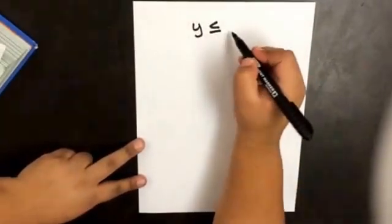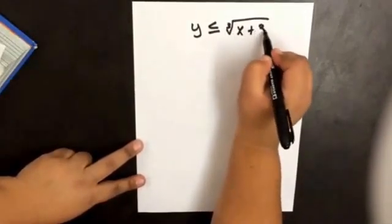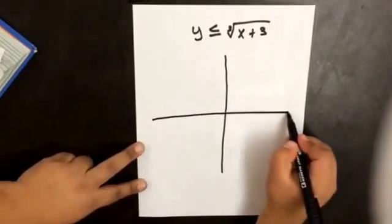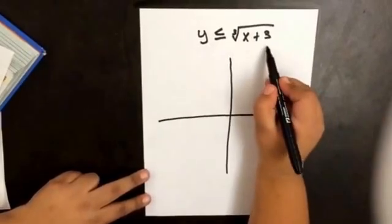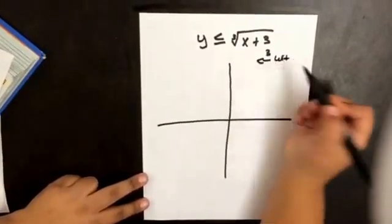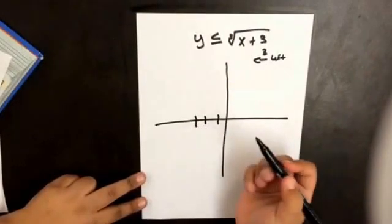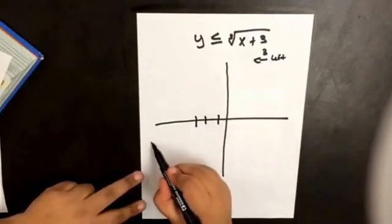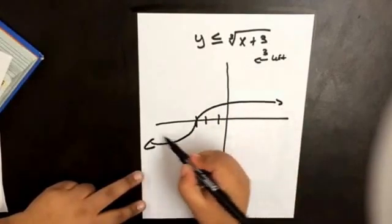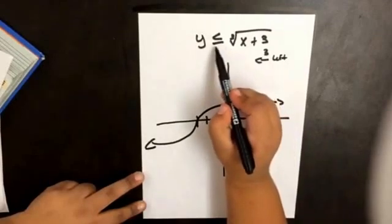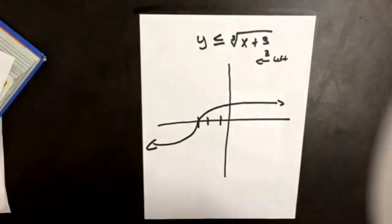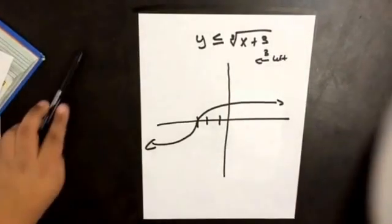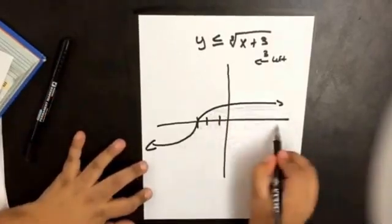Let's do one more example. What if we have y is less than or equal to the cube root of x plus 3? We already know how to graph the cube root of x, so we're going to move it 3 units to the left. It's going to look something like this. It's going to be a solid curve because we have the equality sign. Since y is less than or equal, we're going to shade underneath the graph.